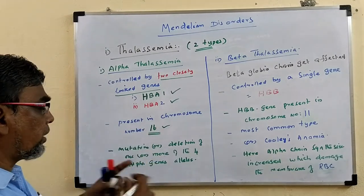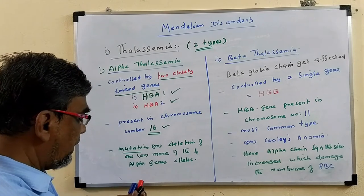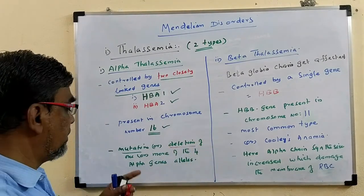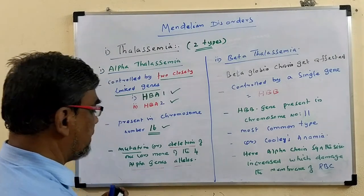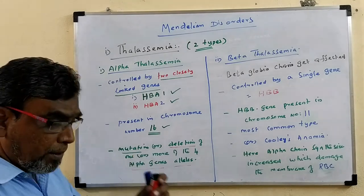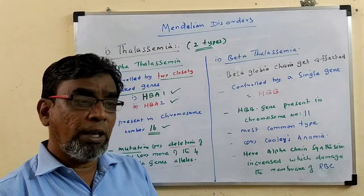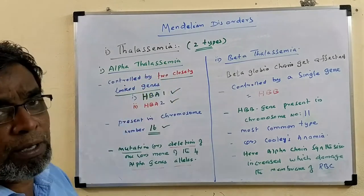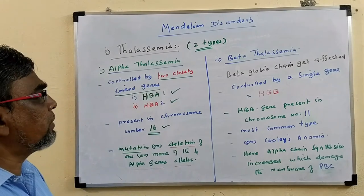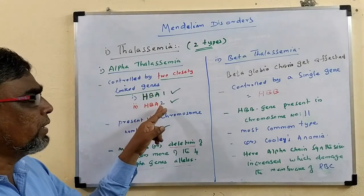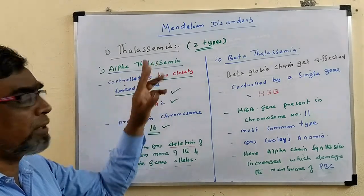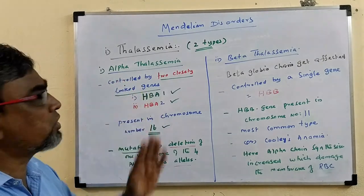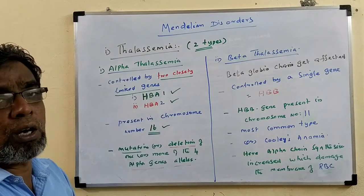Because of mutation or deletion, one or more of the alpha chain genes or alleles may get changed or deleted. So because of mutation or deletion occurring in the alpha chains, this type of thalassemia occurs — it is called Alpha Thalassemia. To summarize: Alpha Thalassemia is controlled by two closely linked genes, HbA1 and HbA2, present in chromosome 16. Because of mutation or deletion in the alpha chains of hemoglobin, Alpha Thalassemia occurs.